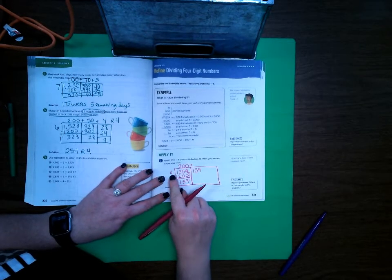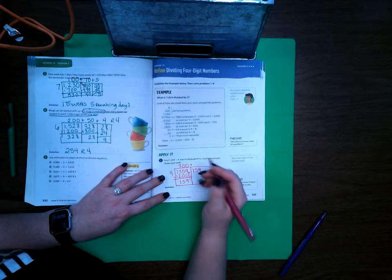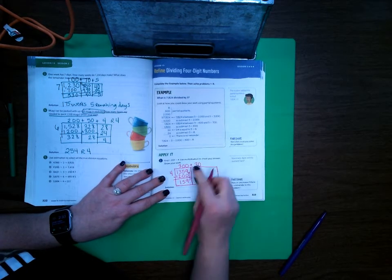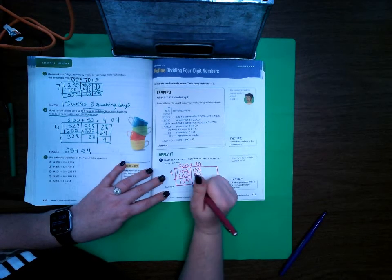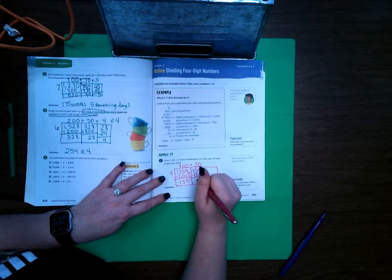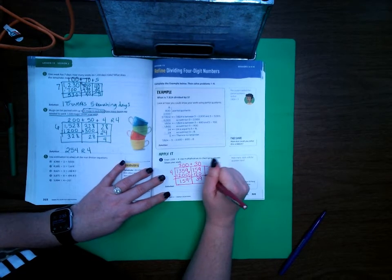Move that 159 up. Can 4 go into 1? No. Can 4 go into 15? Yes, it can go in 3 times. So let's do 30. 4 times 30 is 120. Subtract and we've got 39 left over. So move that 39 up.